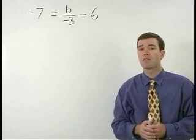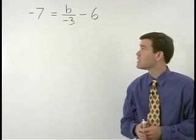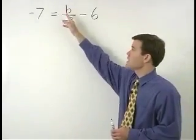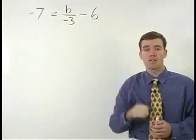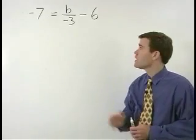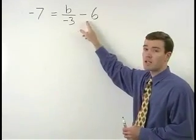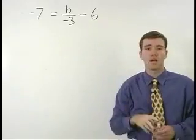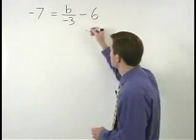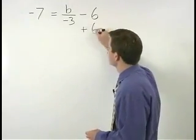First, isolate the term containing B, which in this case is B over negative 3. To isolate B over negative 3, we must get rid of this minus 6, and we do that by adding 6 to both sides of the equation.